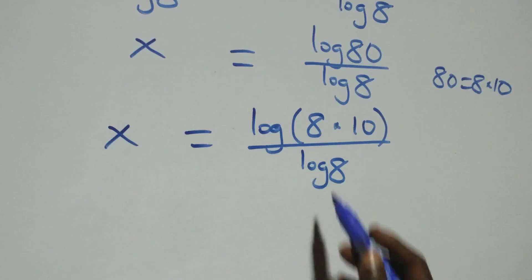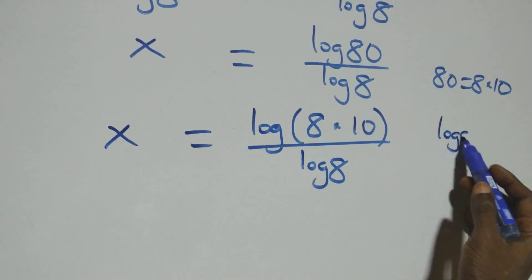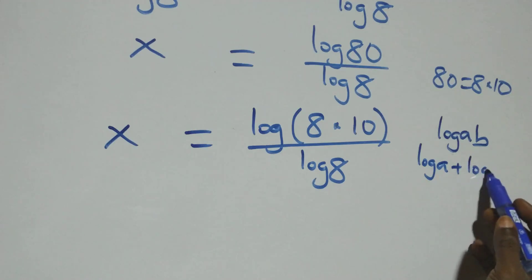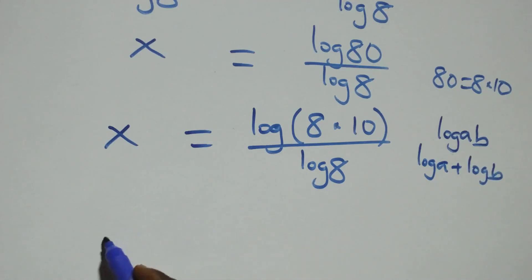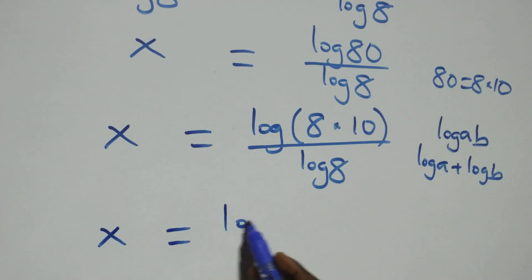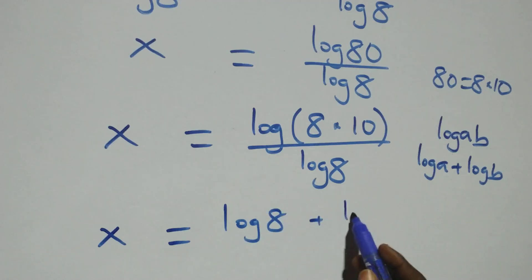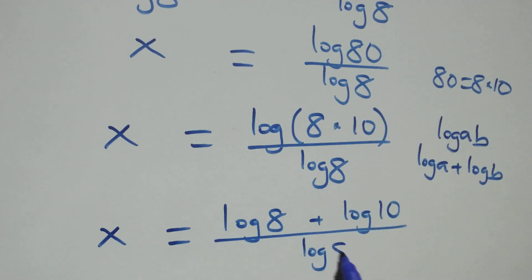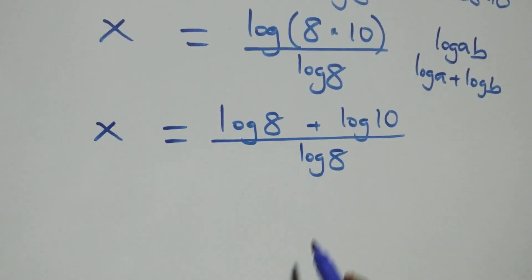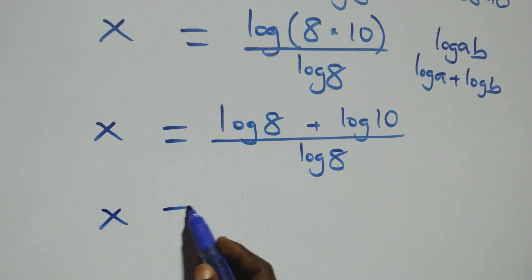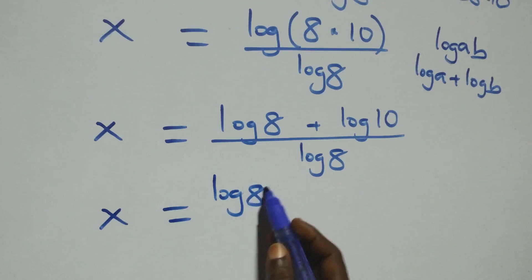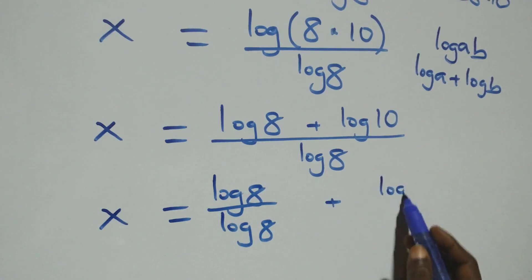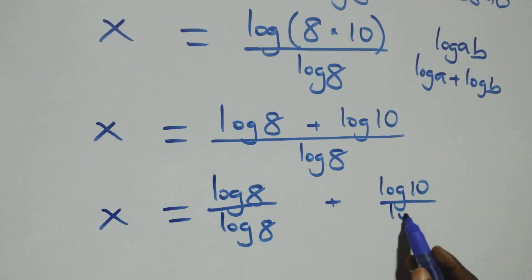This follows the logarithm product rule. When we have log A times B, this is the same as log A plus log B. So what we have becomes X equals to log 8 over log 8, plus log 10 over log 8. We separate this into two fractions.